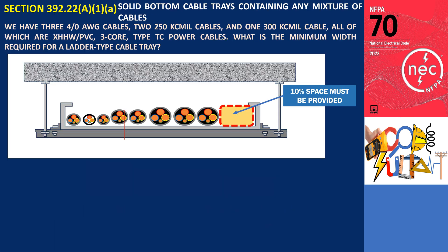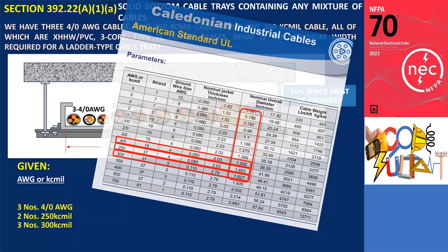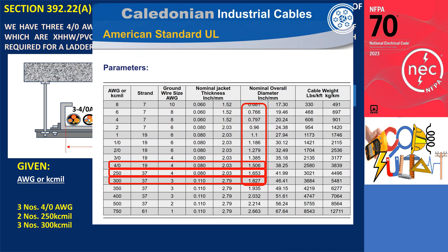For instance, we have three 4-aught AWG cables, two 250 kcmil cables, and one 300 kcmil cable, all of which are XHHW, PVC, 3-core, type TC power cables. What is the minimum width required for a solid-bottom type cable tray?